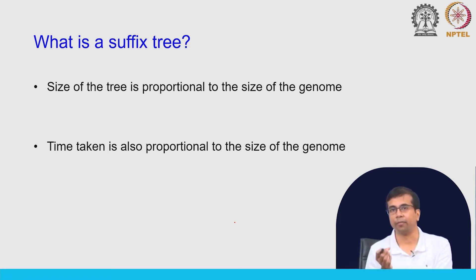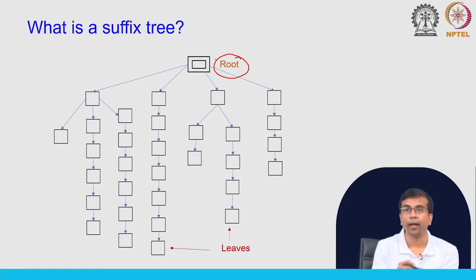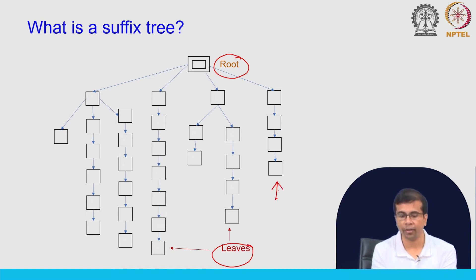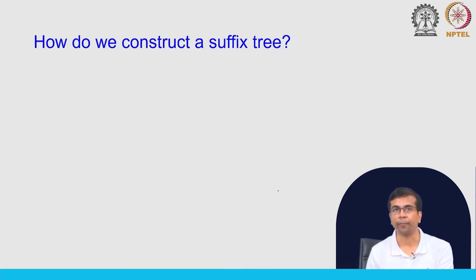This is the kind of structure you will see when you build a suffix tree. You will have a root here and you will have leaves — these are marked with red arrows. There are paths from the root to the leaves, and all these paths represent the suffixes of the string.